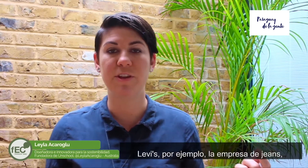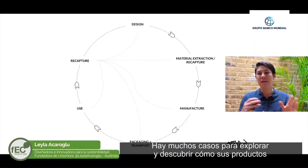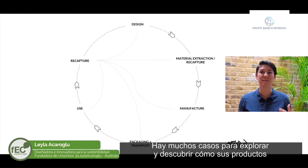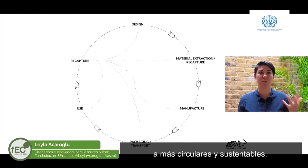Levi's, for example, did a fantastic project where they discovered that the biggest environmental impact of their product was in the use phase, so they innovated around that and also around the materials to help maximize the not needing to wash the product as much. There are lots of case studies out there that help you understand how your products can be moved from a linear unsustainable product to a much more sustainable closed-loop one.